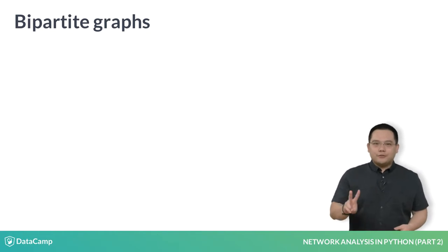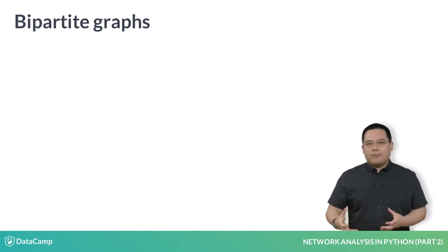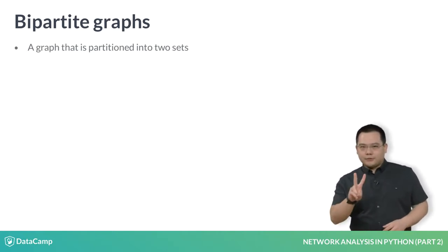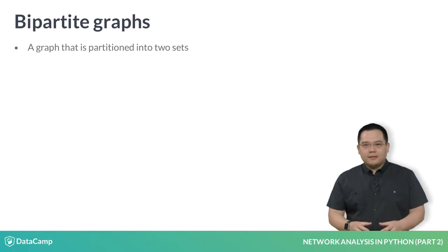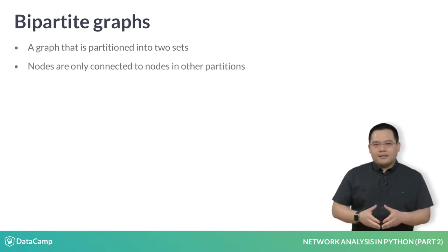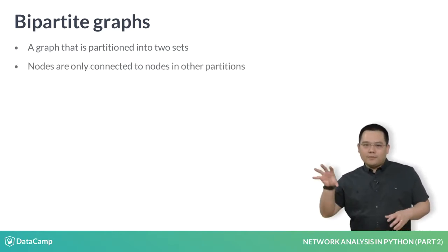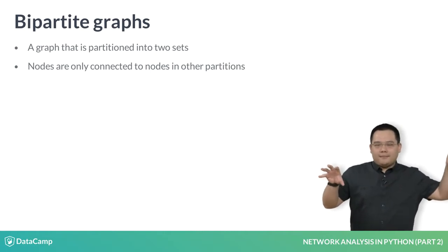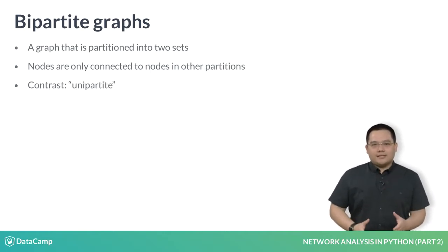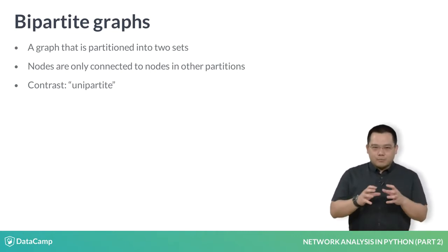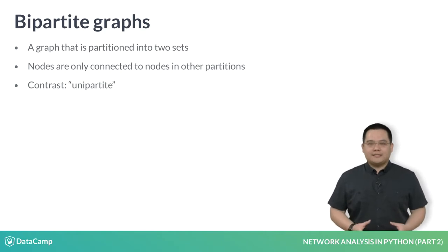There are two conditions for defining a bipartite graph. Firstly, it's a graph in which the nodes are partitioned into two sets. Secondly, the nodes in one set cannot be connected to one another — they can only be connected to nodes in the other set. This is in contrast to the unipartite graphs that you've been using in the previous course, in which the nodes are not explicitly partitioned into two sets.